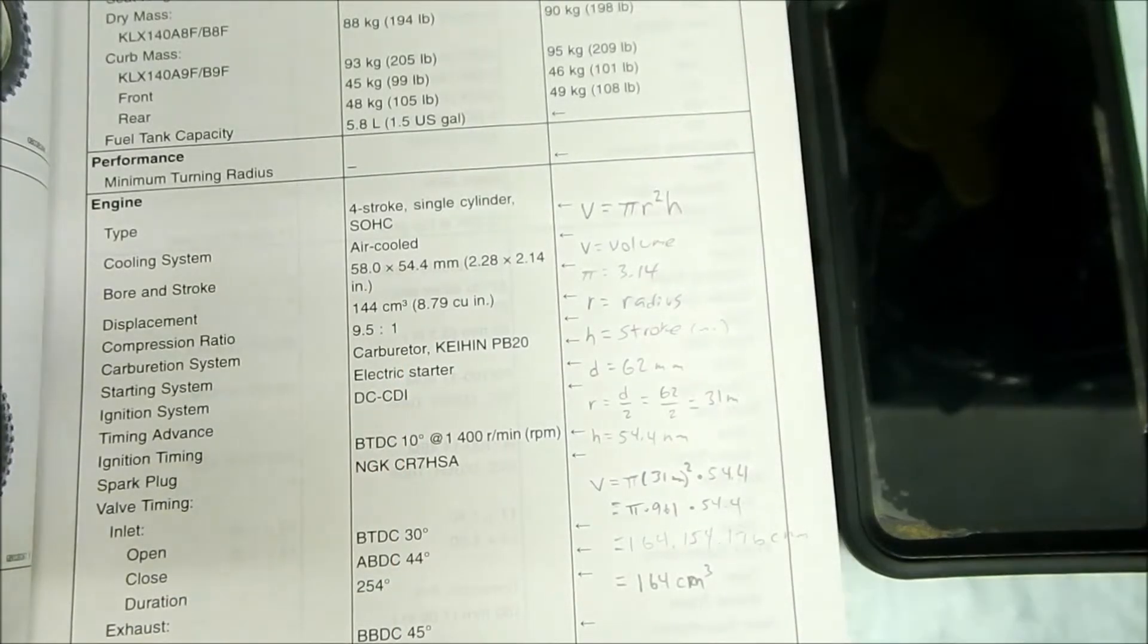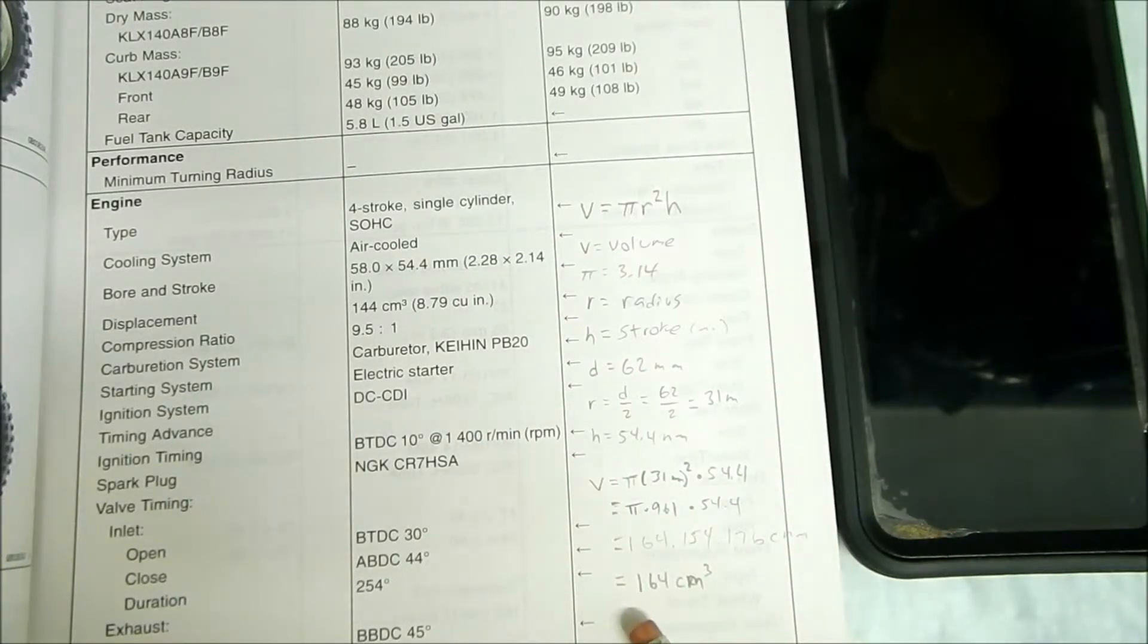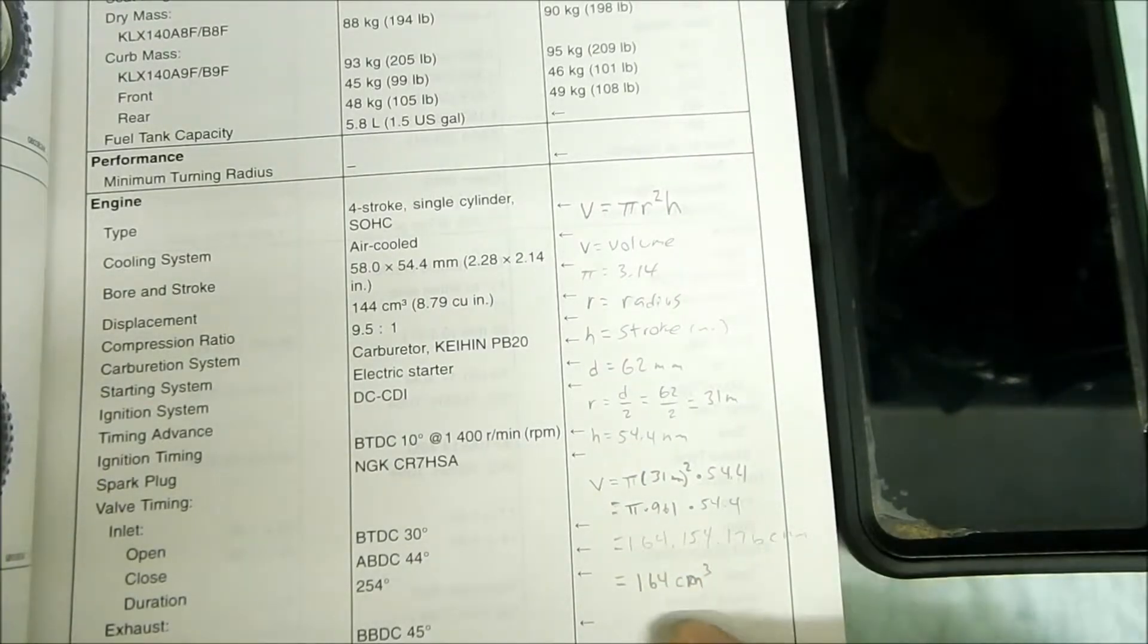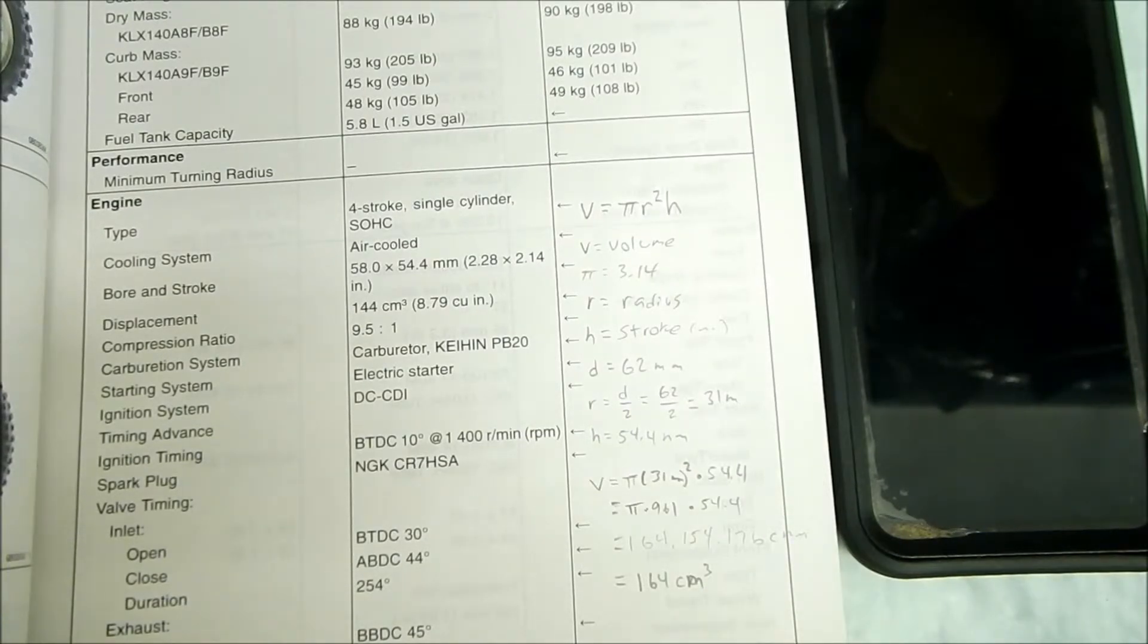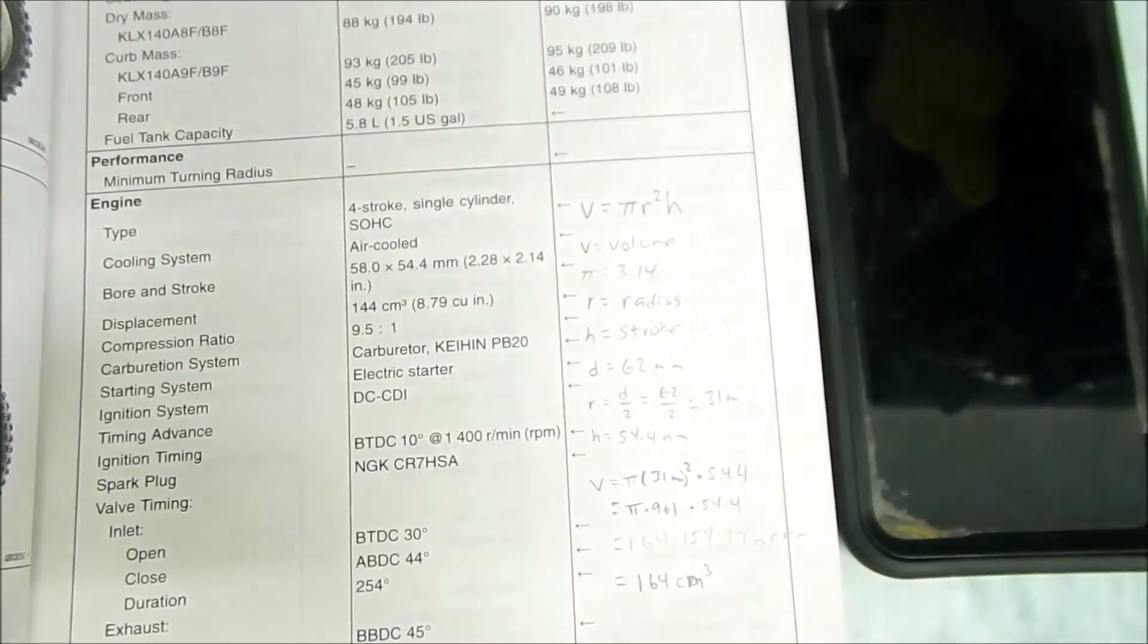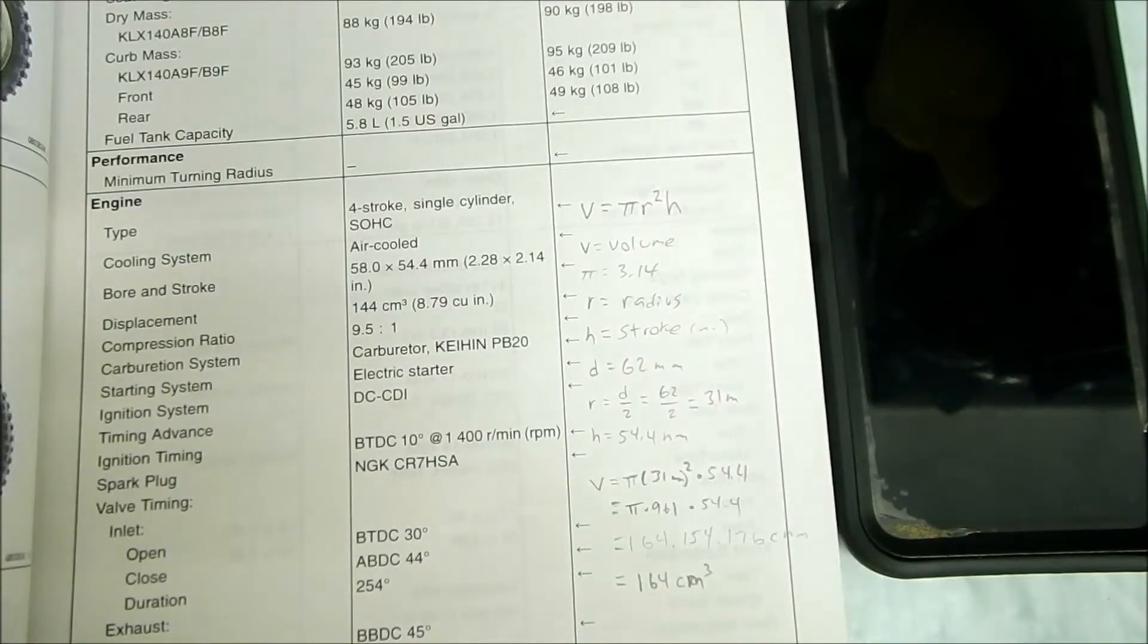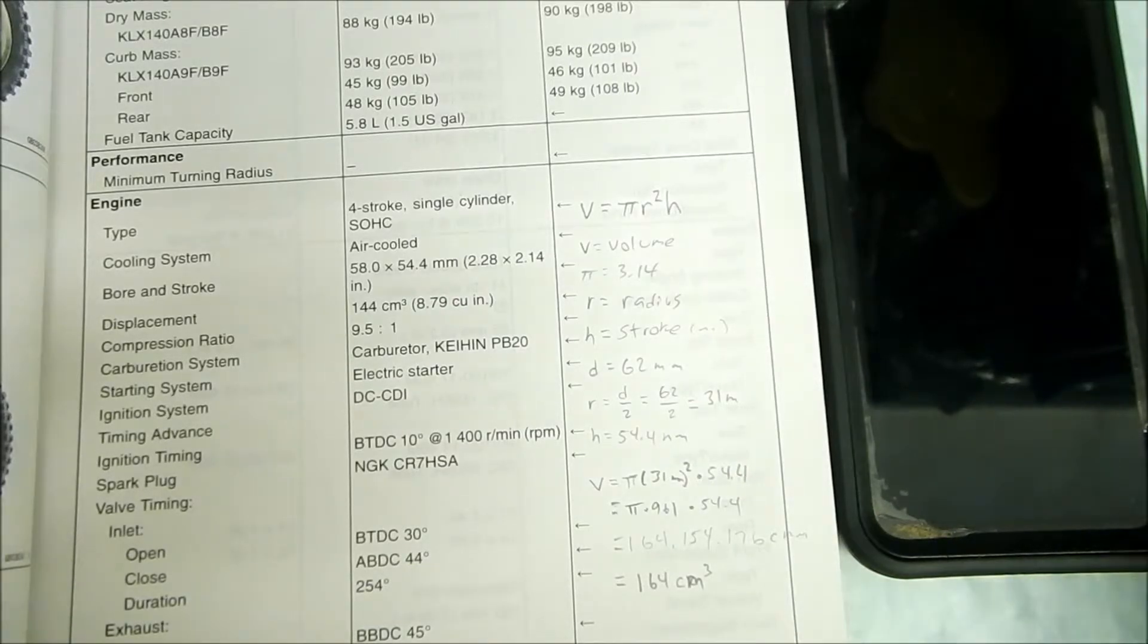So we've got 164 cc or cubic centimeters, that's the volume. And it's only one, there's only one piston, so if it was multiple pistons we would multiply it by however many pistons we have. But since it's a single, we don't need to multiply, the multiplication is one. So there we go, that's the number.